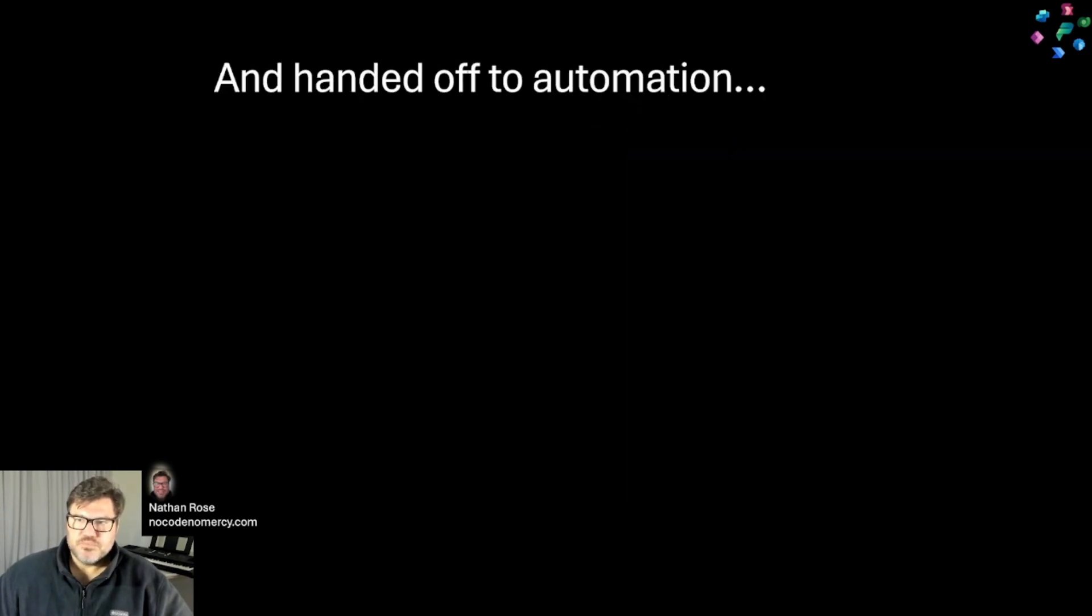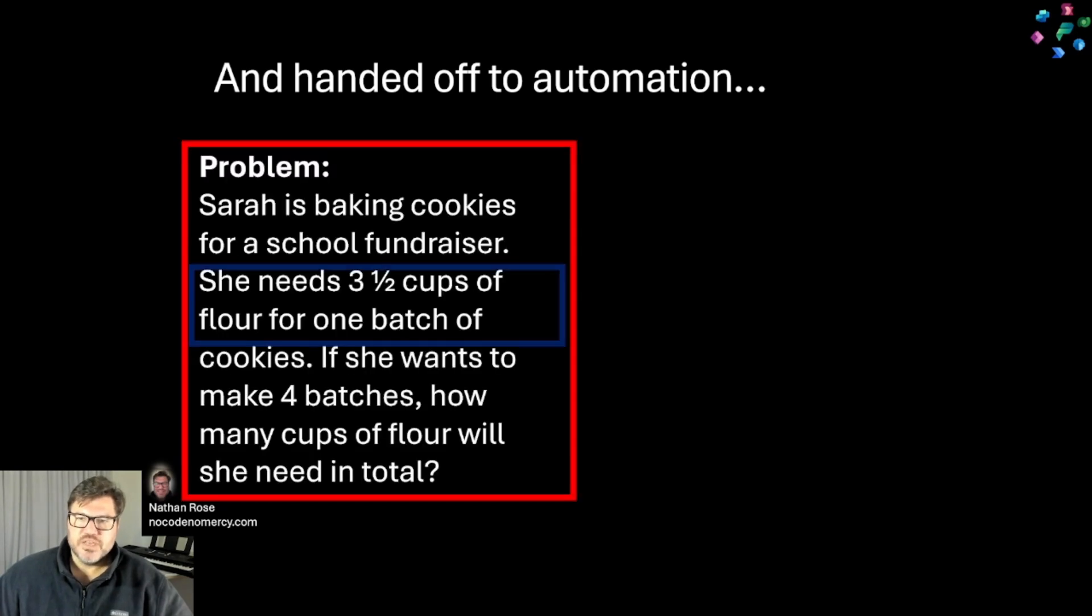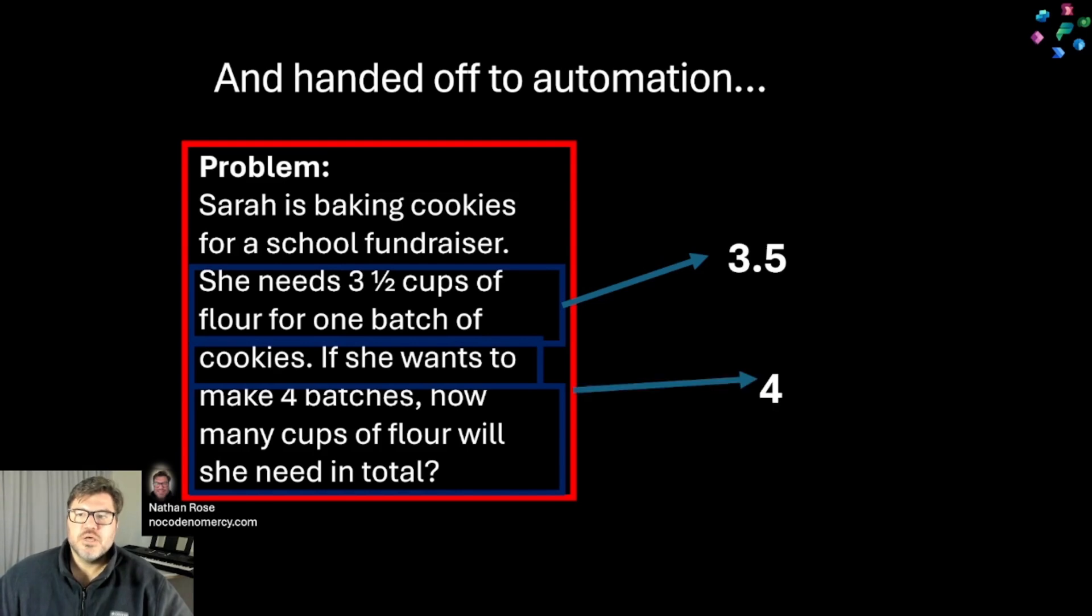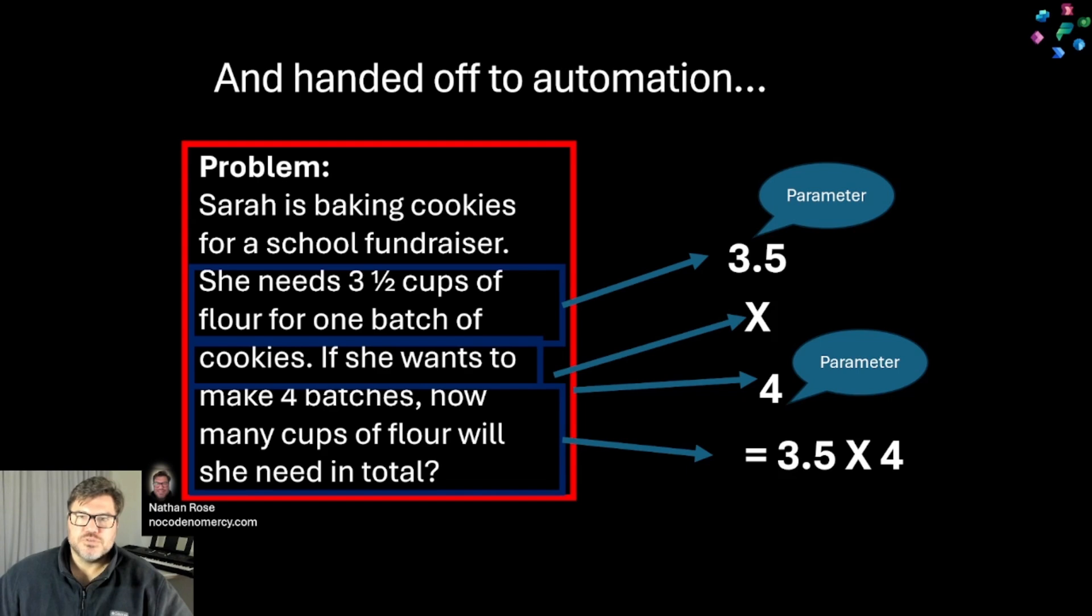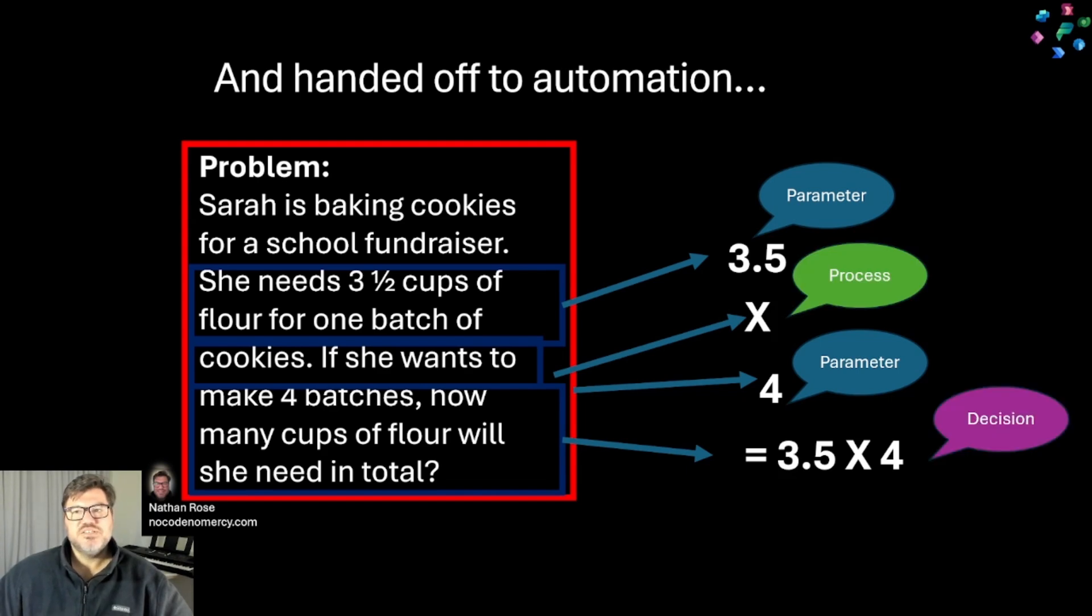And then we started handing off to automation. As we read this and extracted the various pieces of the problem we need to solve - these are parameters and processes - we made decisions about how to combine them. Once we've done that, we're ready to put on our automation hat.